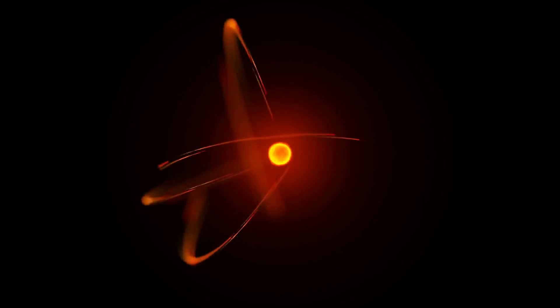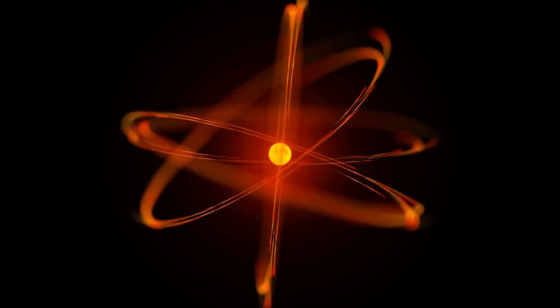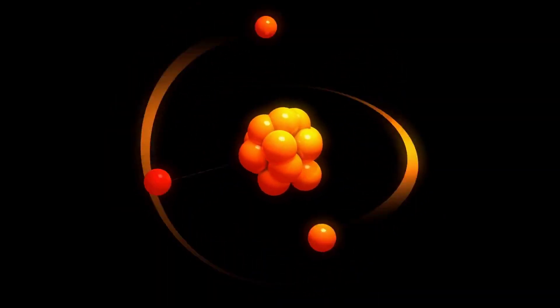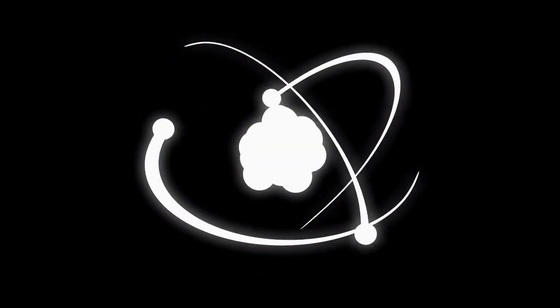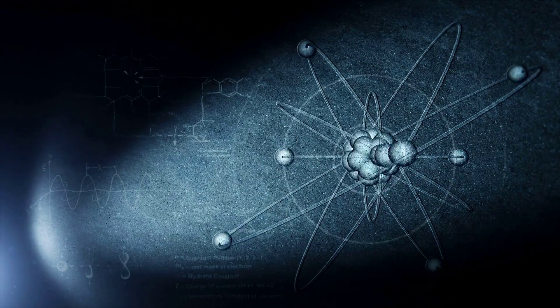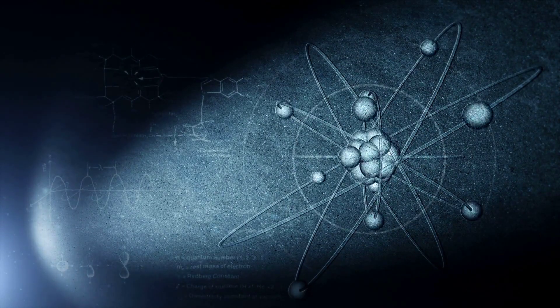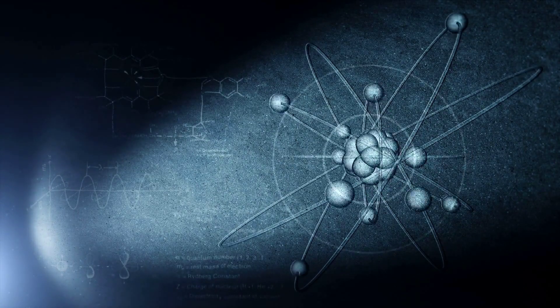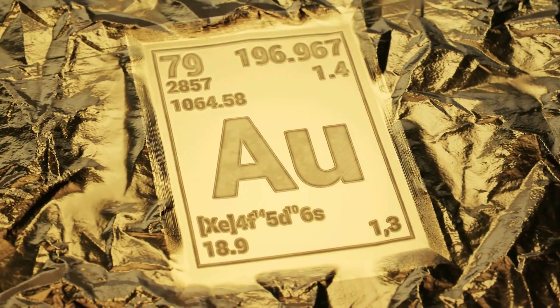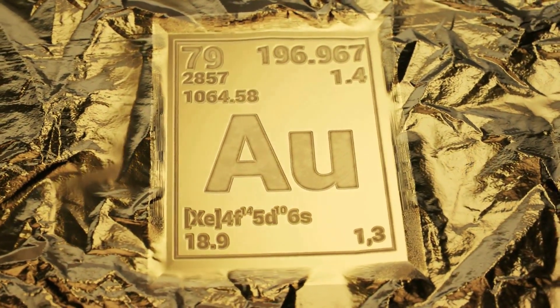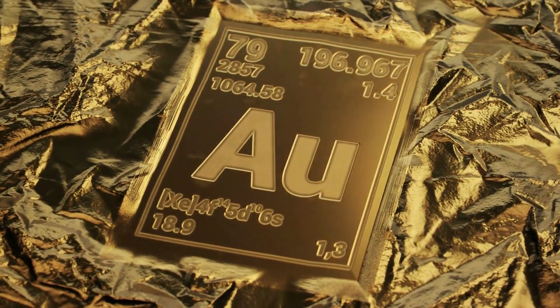Elements are the purest substances in nature, composed of atoms that have the same number of protons in their nuclei. They are the fundamental building blocks that make up all matter in the universe, from the air we breathe to the distant stars in space. But what makes each element unique? The answer lies in the number of protons in its nucleus, which determines its identity and chemical properties. For example, gold, which is the central theme of our video, is an element with the atomic number 79, which means it has 79 protons in its nucleus.